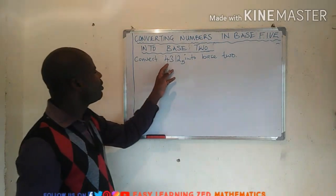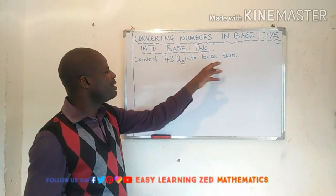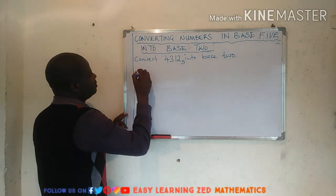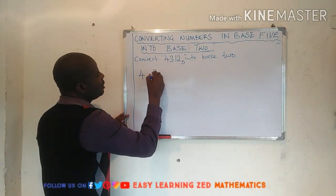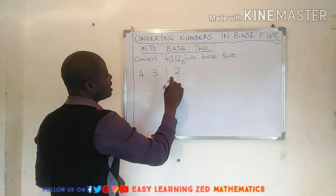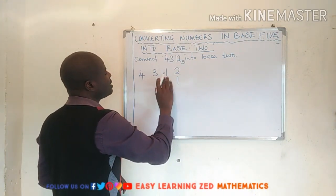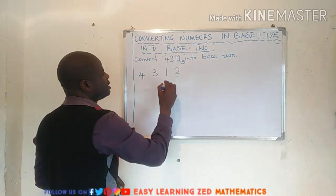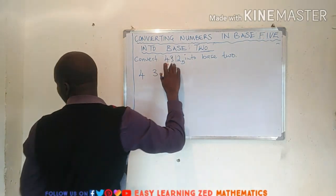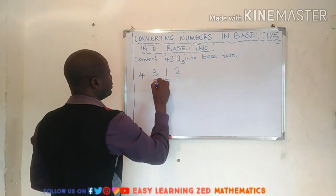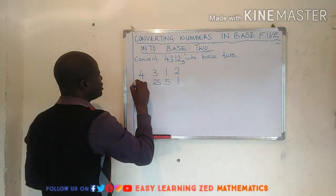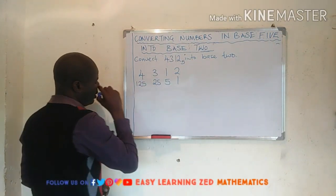On the board we have a question: convert 4312 base 5 into base 2. So what we're going to do first is convert this number into base 10. We have 4312, and the place values are: 2 is in the ones column, 1 is in the 5s column, 3 is in the 25s column, and 4 is in the 125s column.